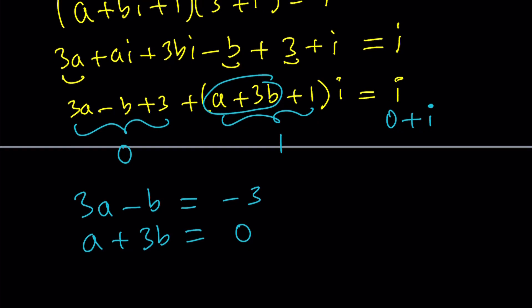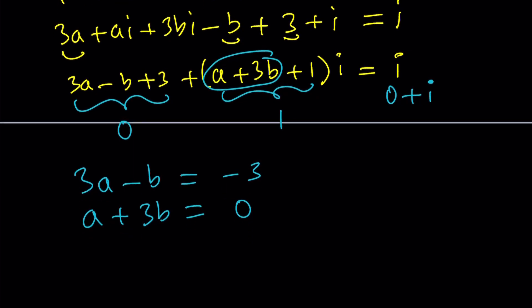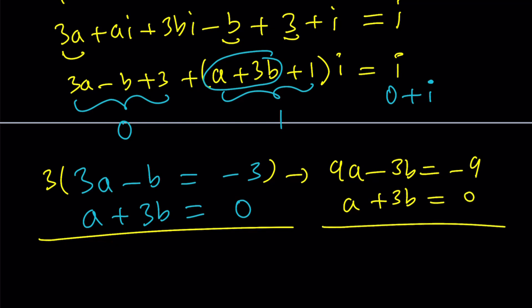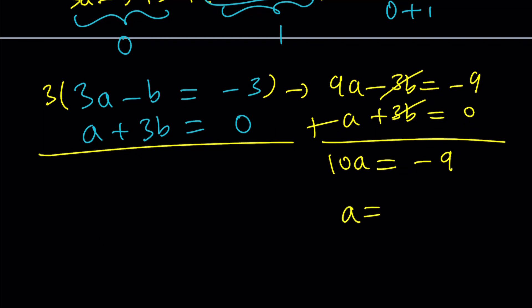Now, to solve this problem, we can eliminate. Let's multiply the top equation by 3, and then that's going to give us 9A minus 3B equals negative 9, and then A plus 3B equals 0. And if you add these up, you're going to get 10A is equal to negative 9. So what does that give you? That gives you A equals negative 9 tenths.